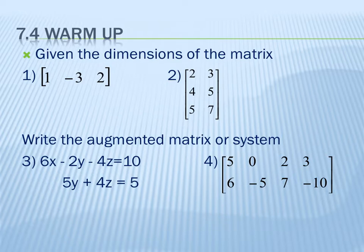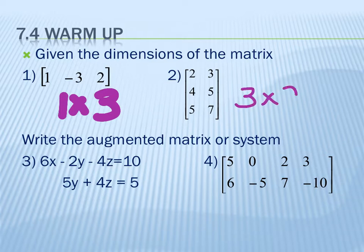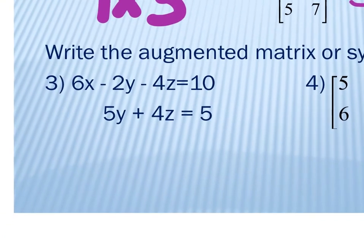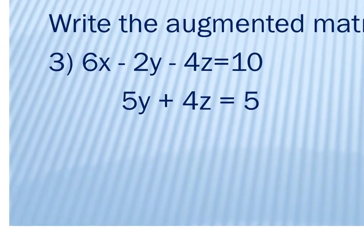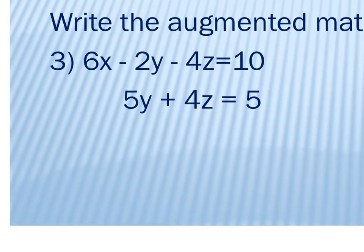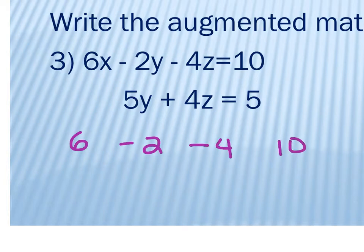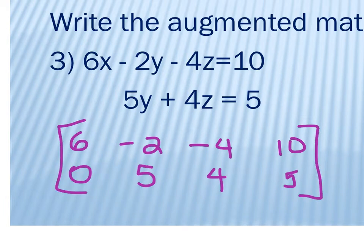And for number 2 it would be 3 by 2. Good. For numbers 3 and 4, you're writing either the matrix from the system or the system from the matrix. In this case it's the matrix, so it would be 6, negative 2, negative 4, 10, and then 0, 5, 4, 5. You do need that 0 — it's got to hold the place.